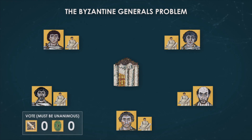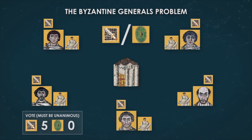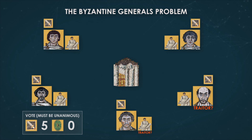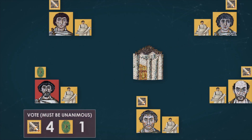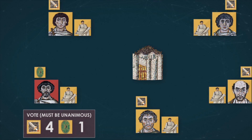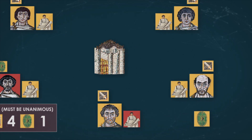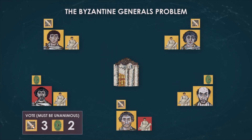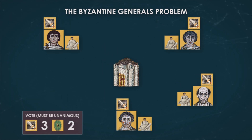The main question is whether to attack or to retreat. Some generals may be traitors, and the same is true for the messengers. Traitorous generals may try to sabotage loyal generals' attempts to decide on a plan, while traitorous messengers may alter the loyal generals' letters. The solution is to come up with a protocol of communication and decision-making that would allow all the loyal generals to agree on the same informed decision.